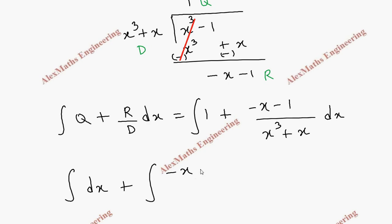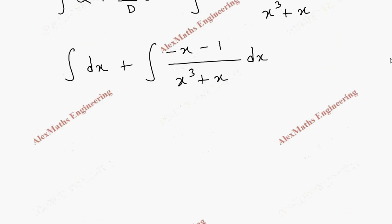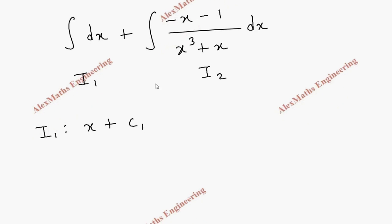Let's split this into two parts: the integral of dx, and another part which is the integral of (minus x minus 1) divided by (x³ plus x) dx. Let's take the first as I1 and the second as I2. Coming to I1, after integration it is x plus C1.